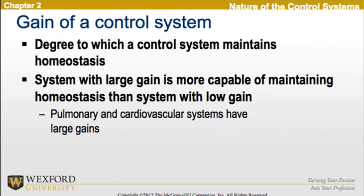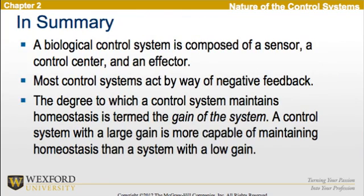Now, looking at the gain of a control system, this is the degree to which the control system maintains homeostasis. Systems with large gain are more capable of maintaining homeostasis than systems with low gain. An example would be the pulmonary or cardiovascular systems, which have large gains. In summary, a biological control system is composed of a sensor, a control center, and an effector. Most control systems act by way of negative feedback, not positive feedback, and the degree to which a control system maintains homeostasis is termed the gain of the system.